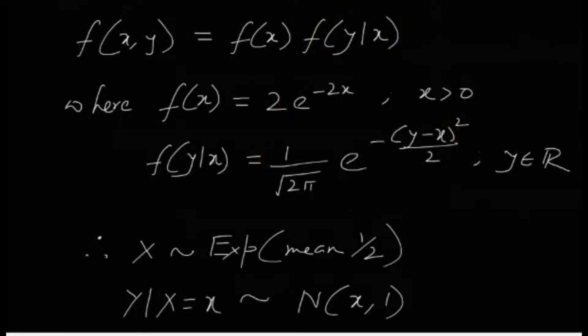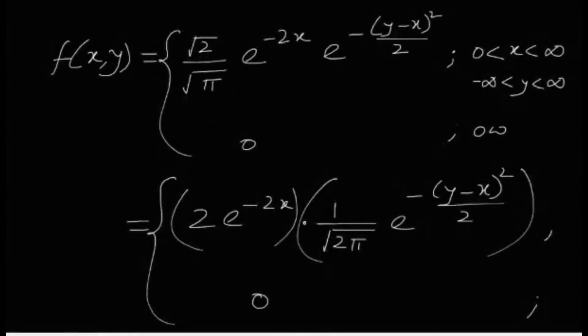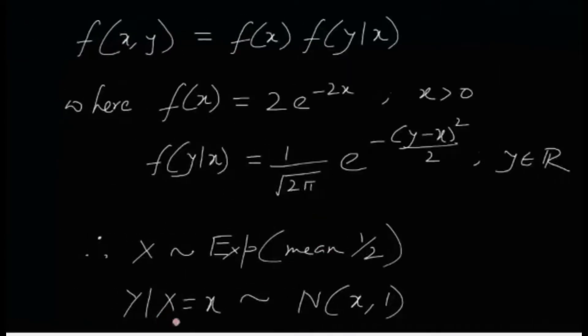Now, expectation of Y, we don't actually have to calculate the entire integral and do all that stuff. It's very easy. We are going to use the conditional form. So expectation of Y can be written as expectation of expectation of Y given X. Now, obviously, Y given X follows normal with mean x and standard deviation 1. Therefore, expectation of Y given X is nothing but x. So mean is x.